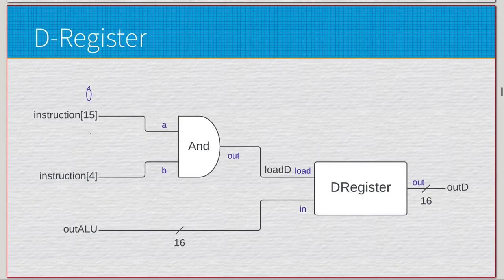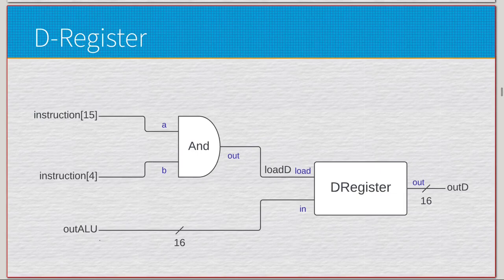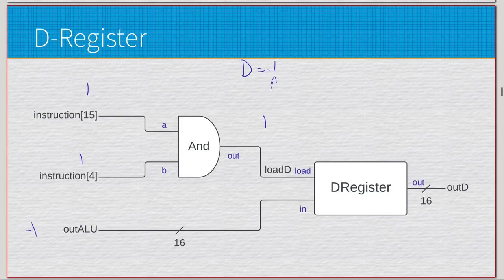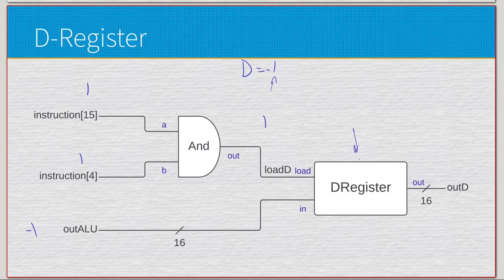For the D register it's a little different. We have instruction bit 15 — the opcode. If it's zero, we're doing an assignment instruction so the D register is not going to be used. We only have the output from the ALU because the D register is only used in C instructions. If it's a C instruction with opcode one, and we're doing something like M equals negative one, the D destination bit is zero — we AND those together and don't load anything to the D register. But if we're doing D equals negative one, the D destination bit is one and we do load to the D register.